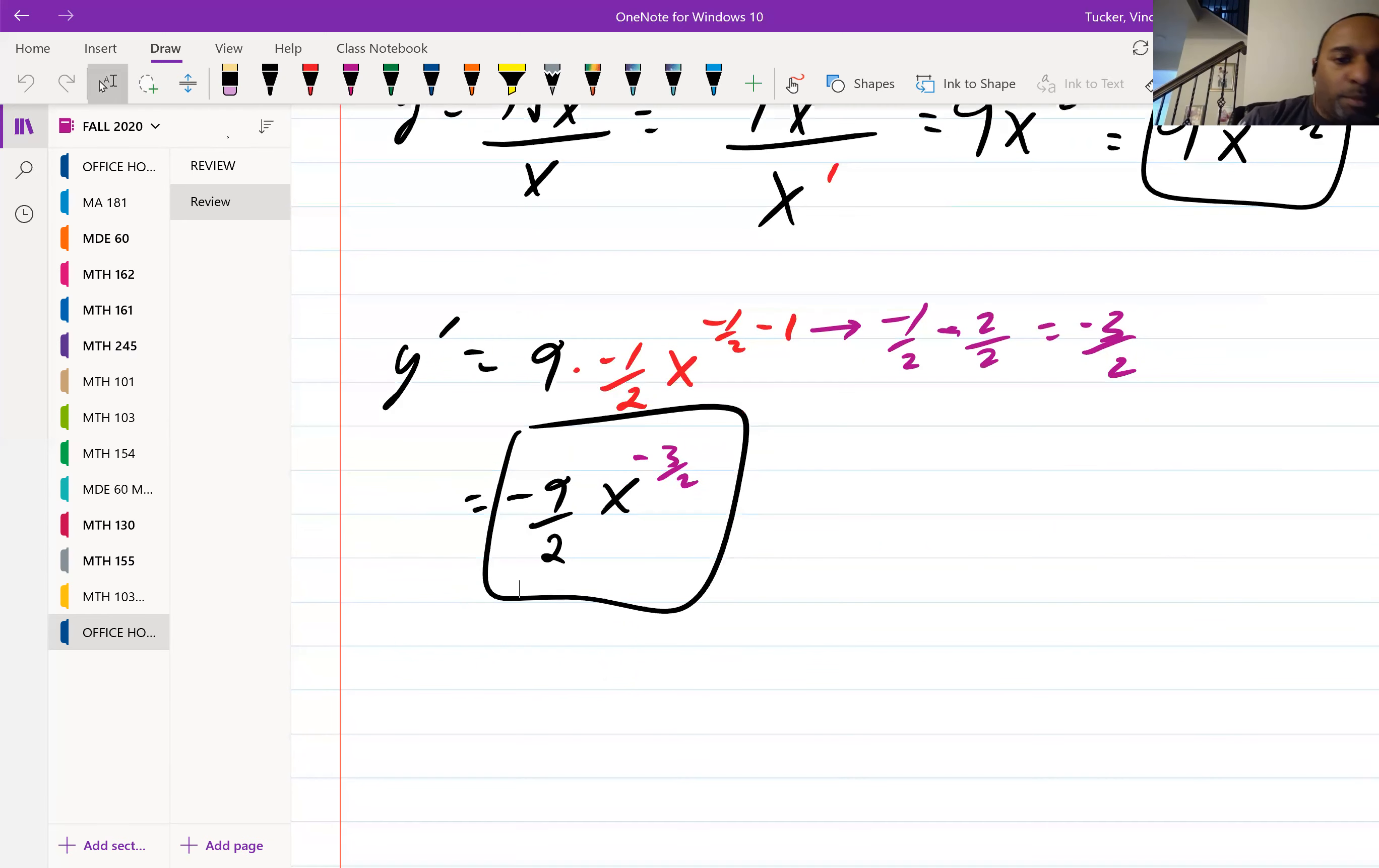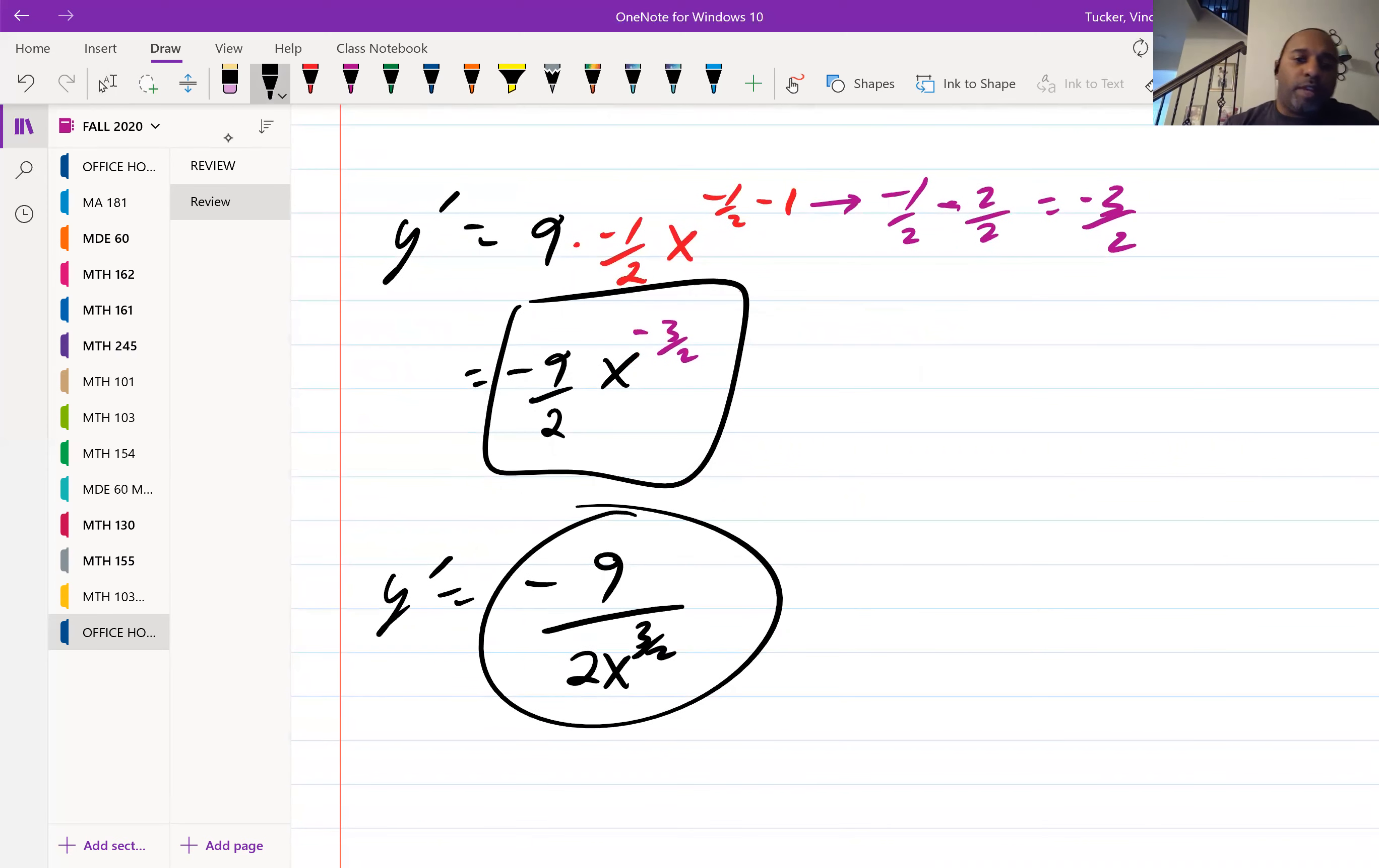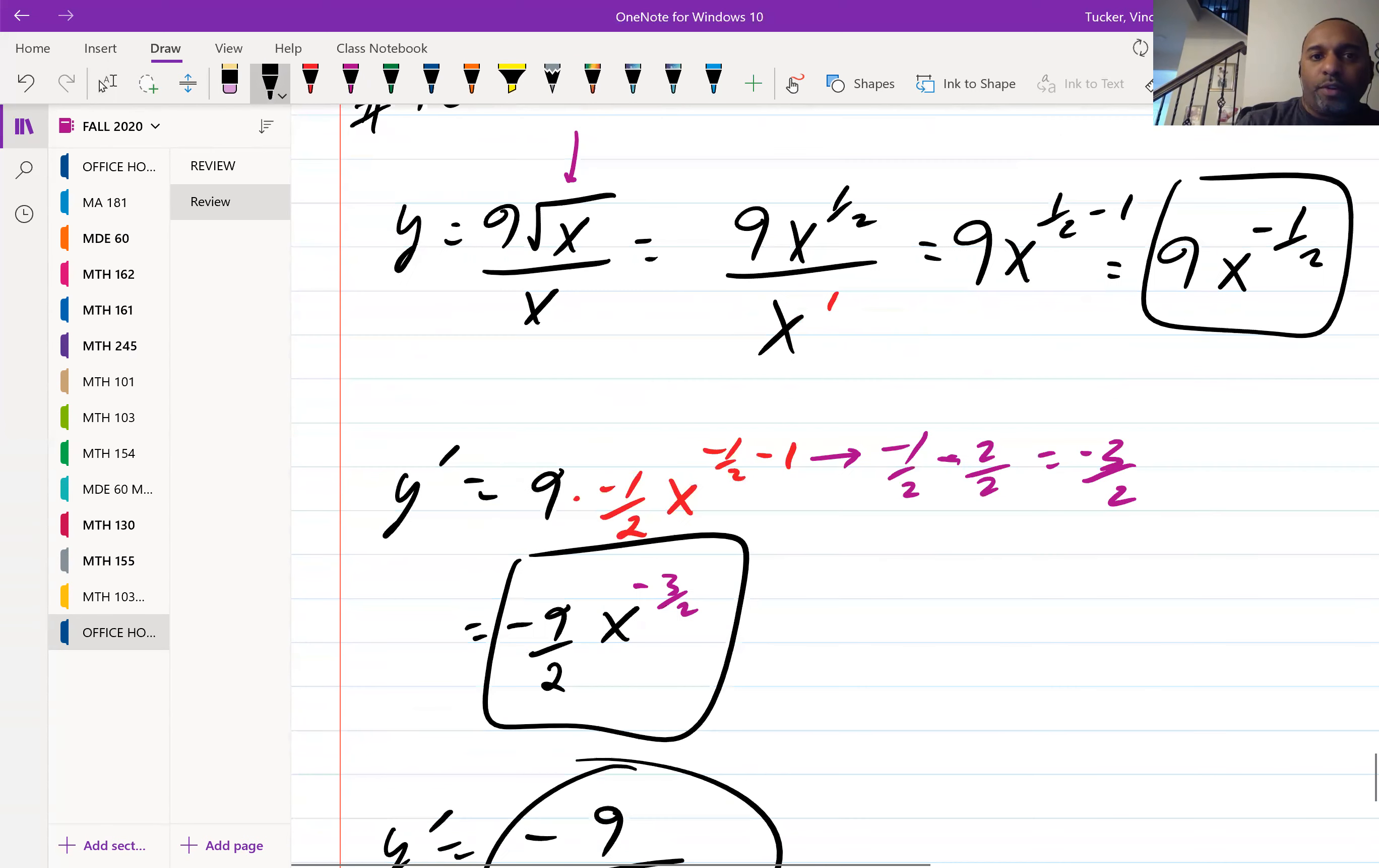And then it says simplify. So if you want to simplify this further, you want to get rid of this negative exponent. So you bring the x to the negative three-halves down to the denominator to make it positive. And this would be your final answer, negative 9 over 2x to the three-halves power. So that is number 10 and those are your three boxes there.